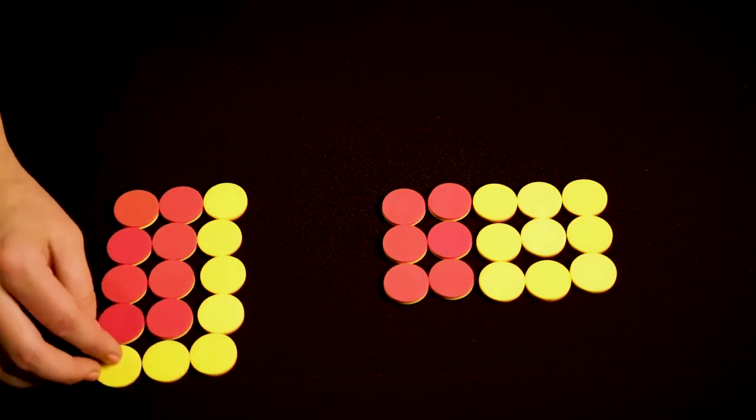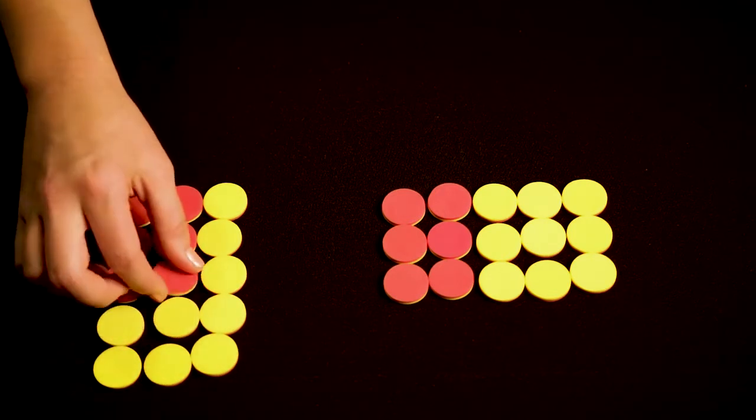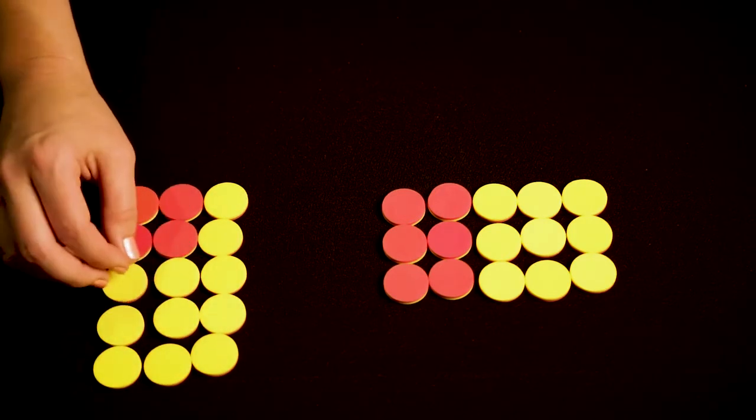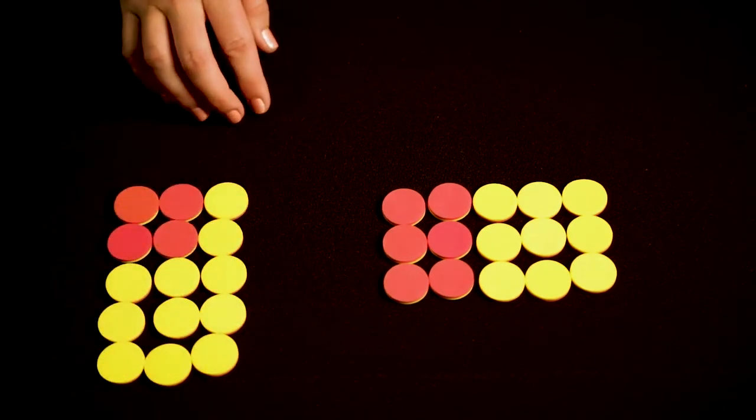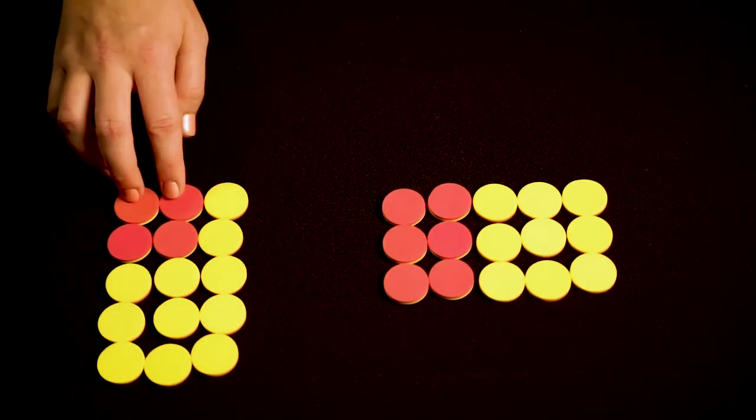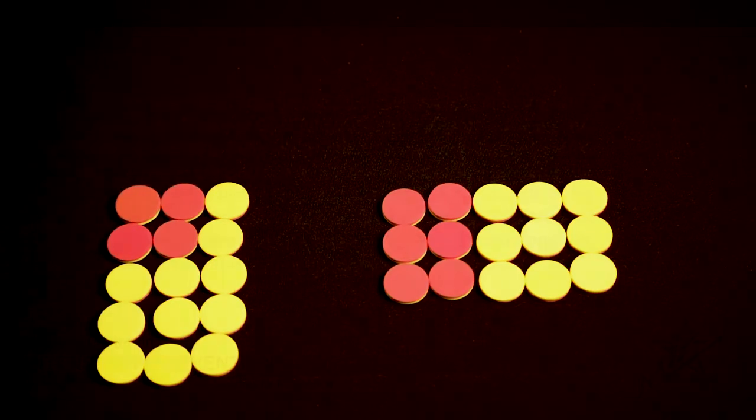There's one, two, three, four, five, six. So ten-fifteenths minus six-fifteenths equals four-fifteenths.